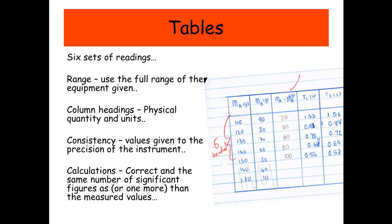Now, a simple thing that students often forget, column headings, you have to have a physical quantity and a unit. Please be consistent as well. So the values that you record must be to the precision of your instrument. And then if you have to do a calculation with the values that you've recorded, well, the number of significant figures can be the same as or one more than the measured values.